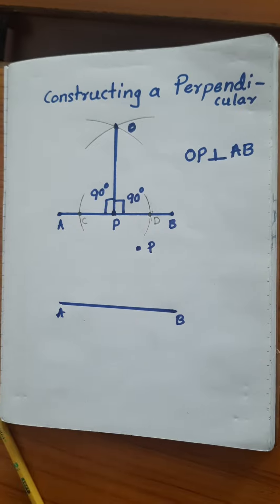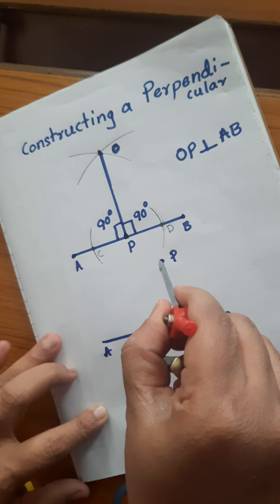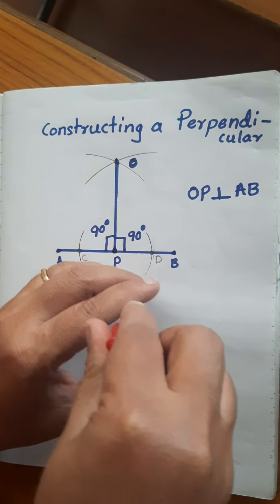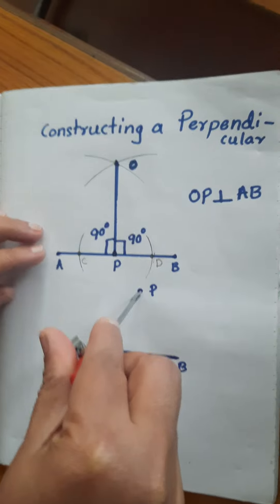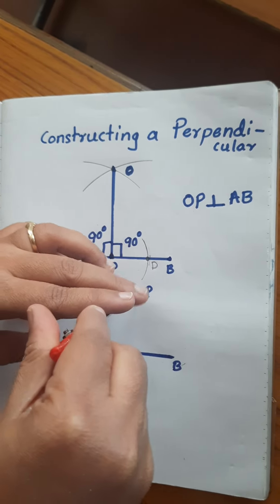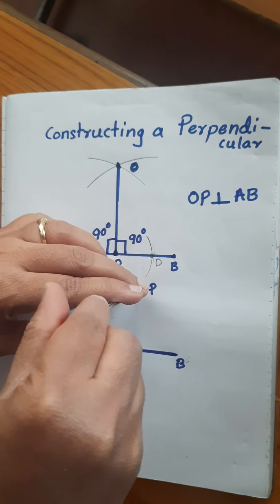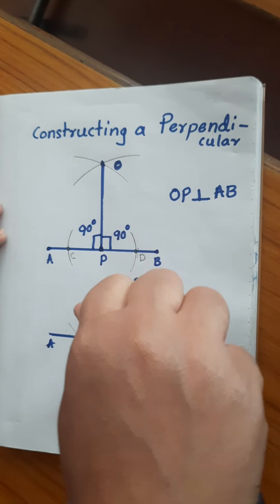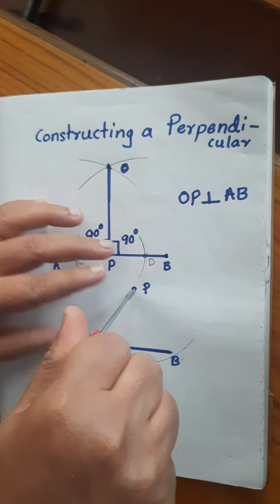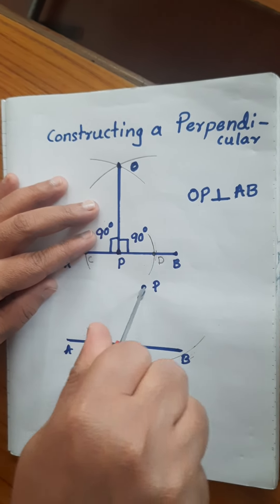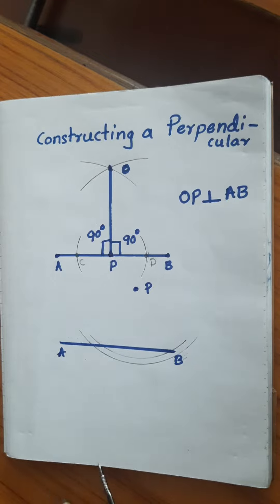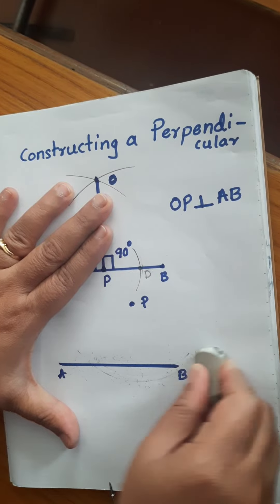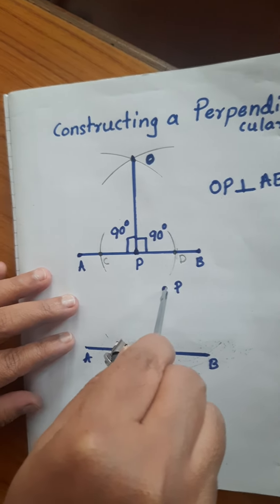Now how should we construct this? From the P point, we should check whether both sides are touching the line segment or not. Check if it is touching; make it shorter. From here it is not touching both sides.